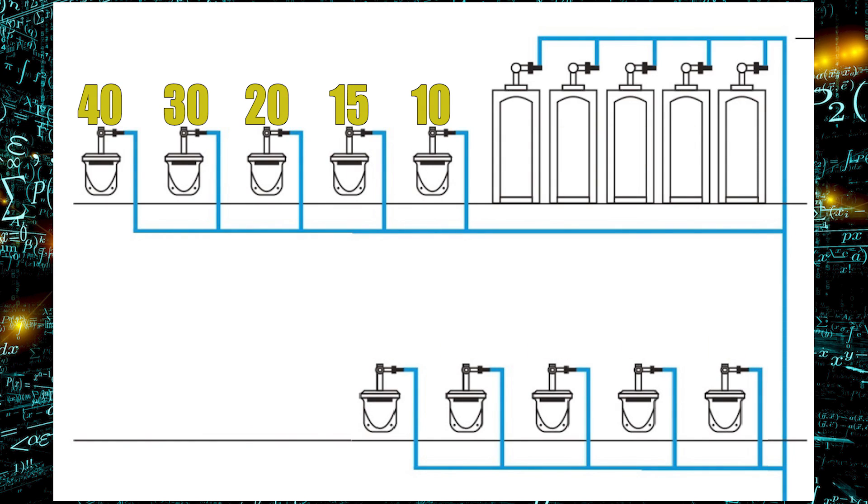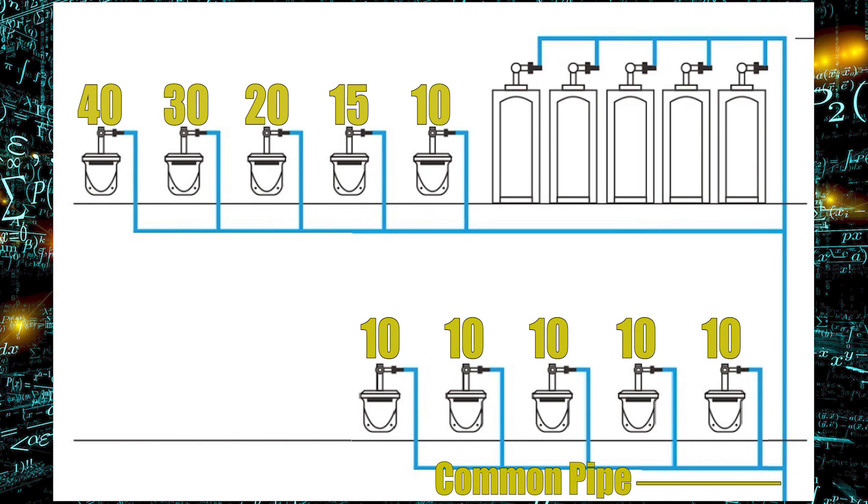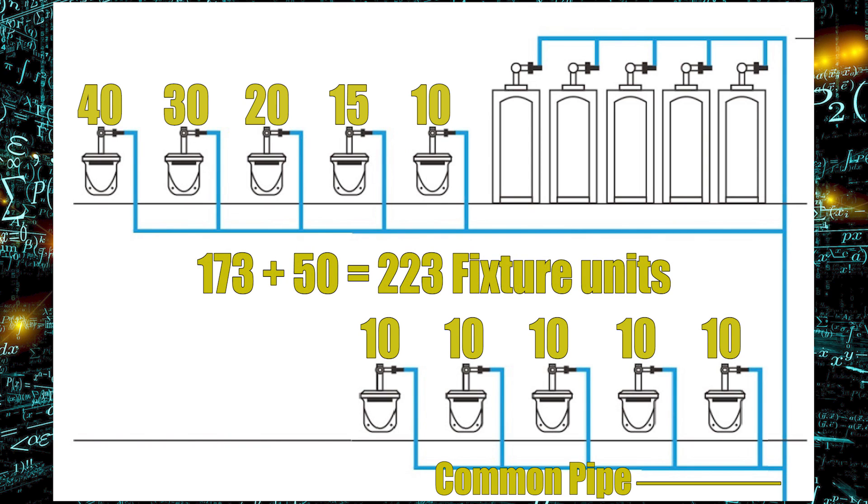Where this gets different is the lower floor. So when I'm looking at this pipe here, I have all the water closets upstairs, which was 40, 30, 20, 15, 10. And now I have five more water closets that are 10, 10, 10, 10, 10. So this common pipe that's down below here will have the 173 fixture units from the upper floor and plus 50 fixture units for the lower, which is 223 fixture units in total.